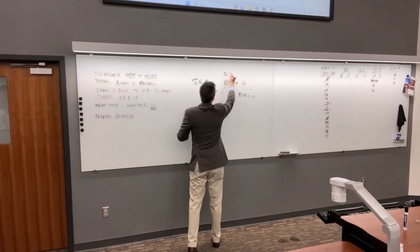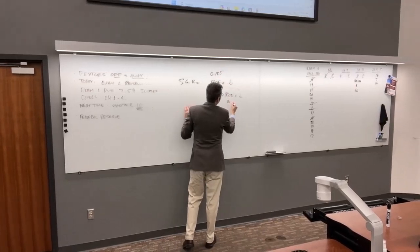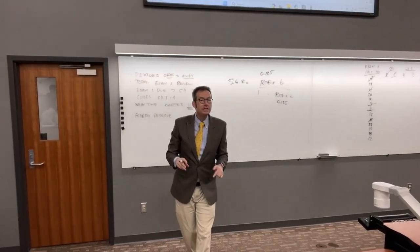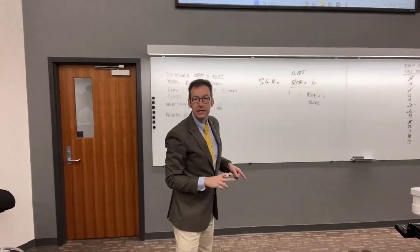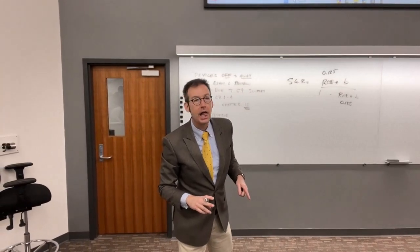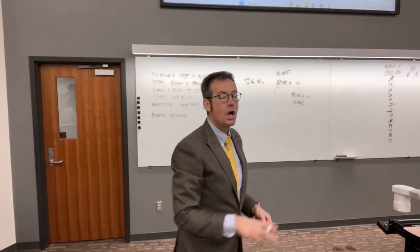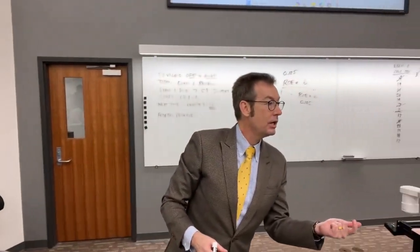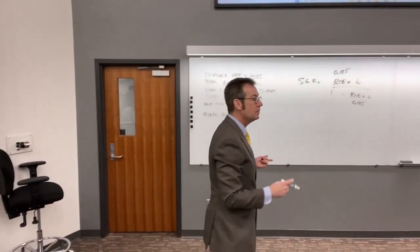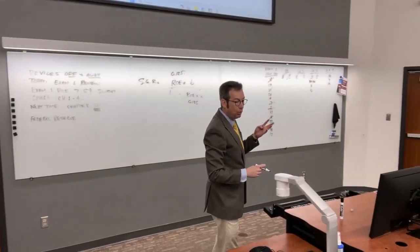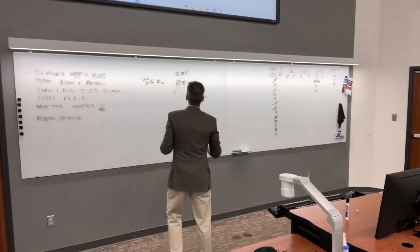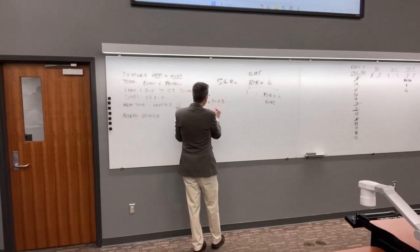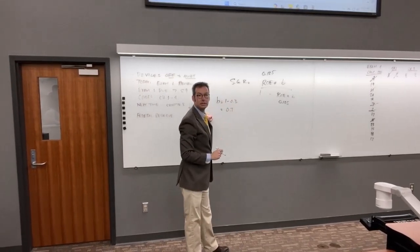Have they given us B? No — they gave us the dividend payout ratio. The relationship between B and the dividend payout ratio is B equals 1 minus the payout ratio. So B equals 1 minus 0.3, which equals 0.7.